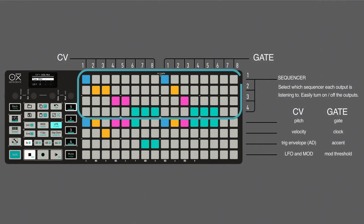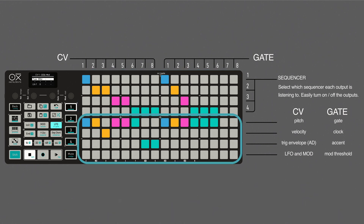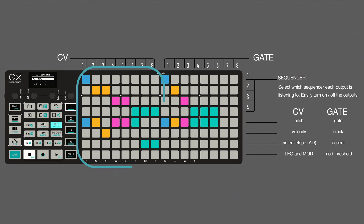The first 4 top rows are used to assign the output to a specific sequencer. The bottom 4 rows are the signal type selection, where you can select what kind of CV and gate information you want to send. The first 8 columns are the CV outputs and the later 8 are the gate outputs.